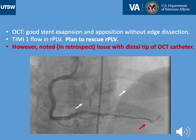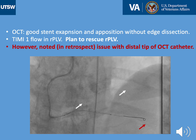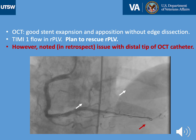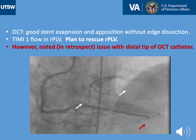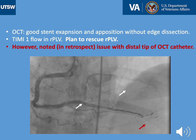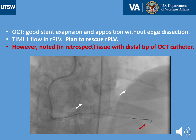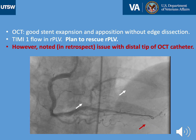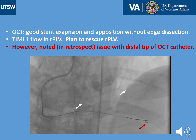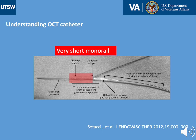We noted TIMI 1 flow in the right PLV, as shown with the white arrows, so we immediately planned to rescue the right PLV branch. However, we noted the issue of the distal tip of the OCT catheter being very close to the actual tip of the wire, as shown on the image with the lead arrow. We need to pause here to understand the OCT catheter anatomy to better understand what could have happened during the procedure.